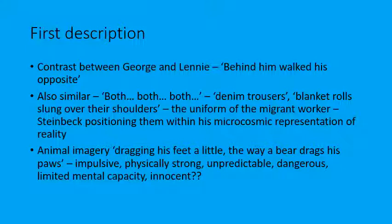The description uses 'both' repeatedly — both wore denim trousers, both had their blanket rolls slung over their shoulders. Steinbeck emphasises both their differences and their similarities. The things that mark them as similar are their uniform — the denim trousers are what a working man would wear in the 1930s, marking them as typical migrant, itinerant workers. Steinbeck is positioning them within what he calls a microcosm, a microcosmic representation of reality — here are two migrant workers, let's see what happens to them.